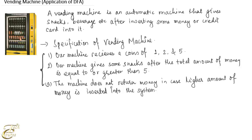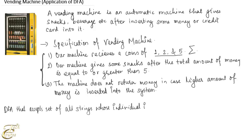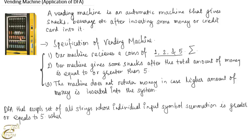Now we will design the mathematical model — the DFA for this vending machine — based on these three assumptions. The machine only receives coins of 1, 2, and 5, so this is the alphabet of our required DFA. The language of the required DFA is the set of all strings whose individual input symbol summation is greater than or equal to 5, where the input alphabet equals {1, 2, 5}.